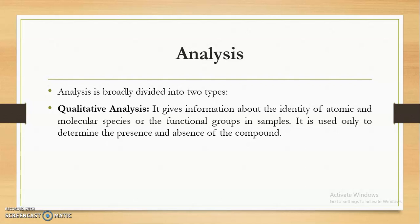Qualitative analysis gives us information about the identity of atomic and molecular species — meaning which components are present in our substance. It also identifies the different functional groups that are present in the samples. Qualitative analysis is used to determine the presence or absence of a compound. Suppose four different substances A, B, C, D are present — in qualitative analysis, we will be checking whether A is present or not, whether B is present or not.